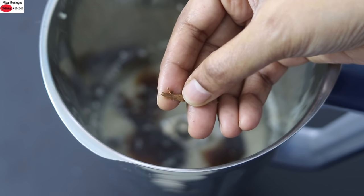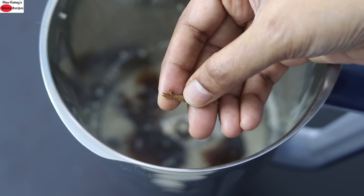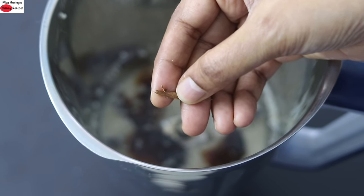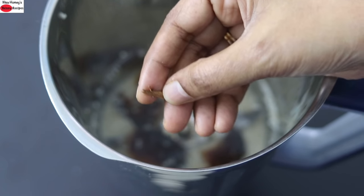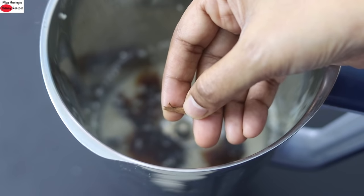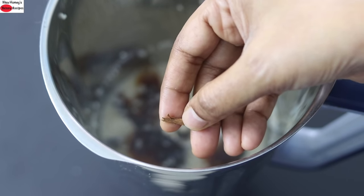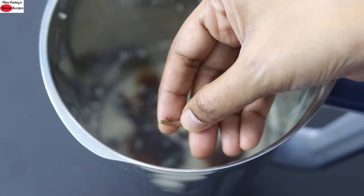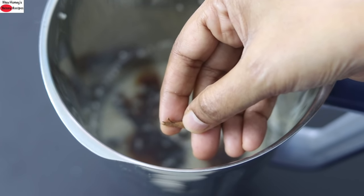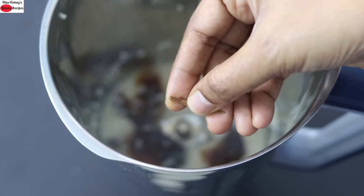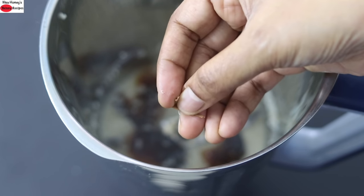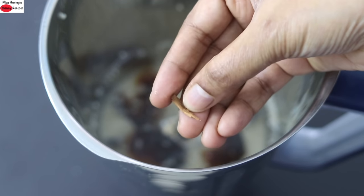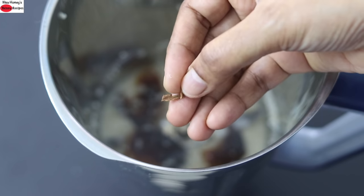Instead of whole cinnamon, you can use cinnamon powder, vanilla extract, cardamom powder, or even nutmeg powder. Any flavorings of your choice can be used in this milk. If you're planning to make tea or coffee, then you can skip adding dates and cinnamon. If you plan to enjoy the milk on its own, dates and cinnamon will enhance the taste and flavor of the sesame seed milk.